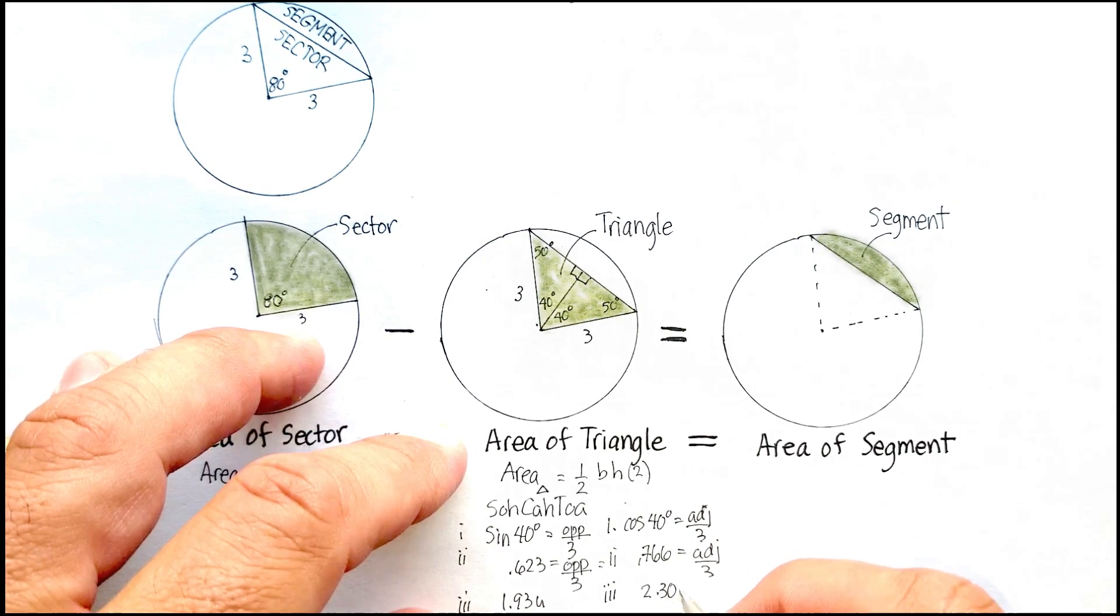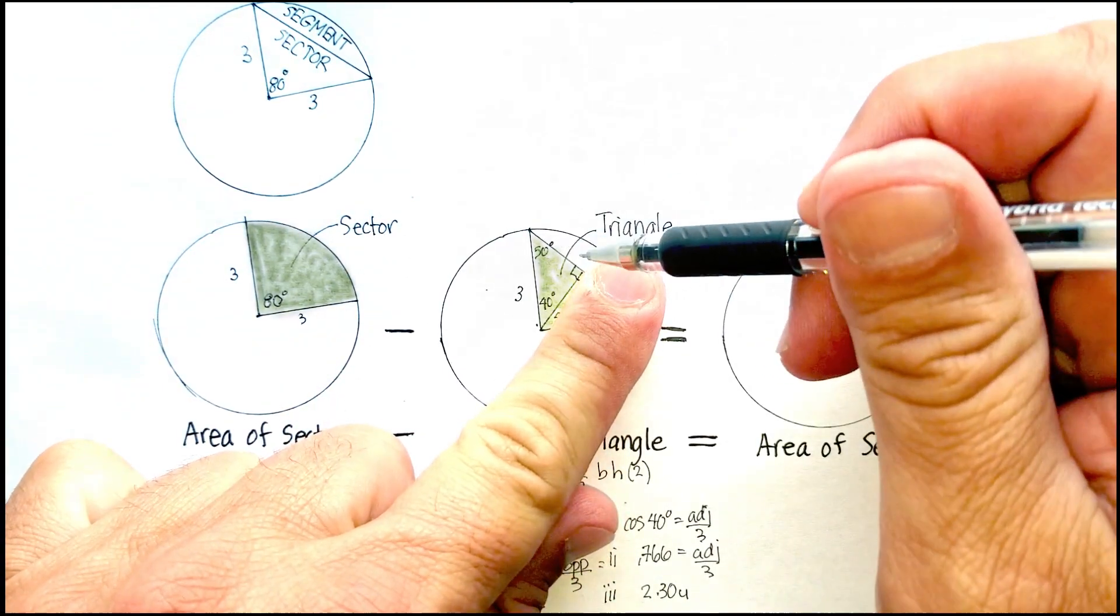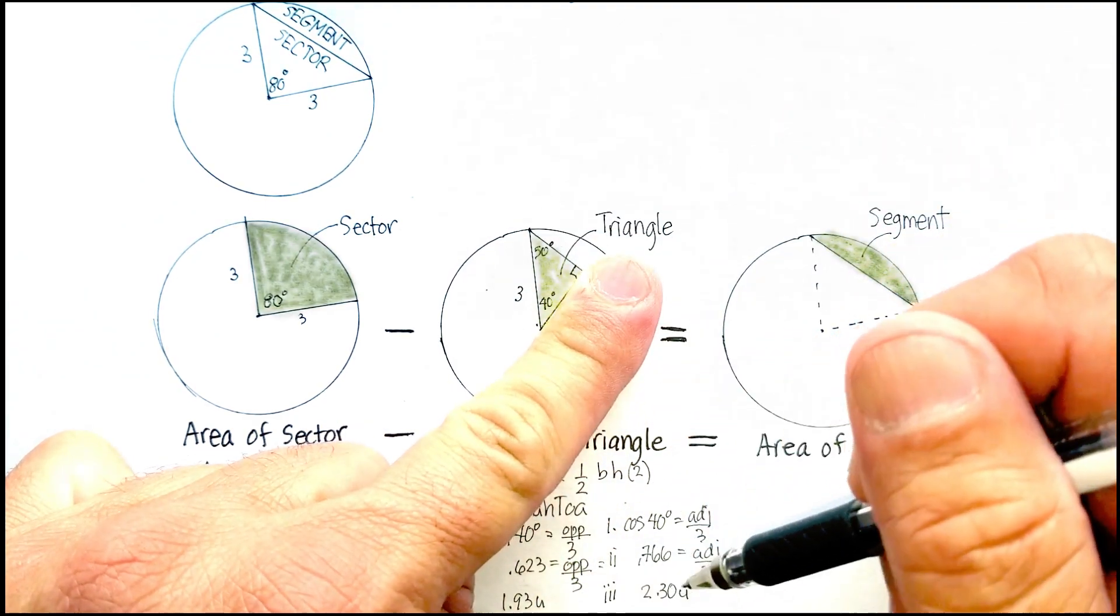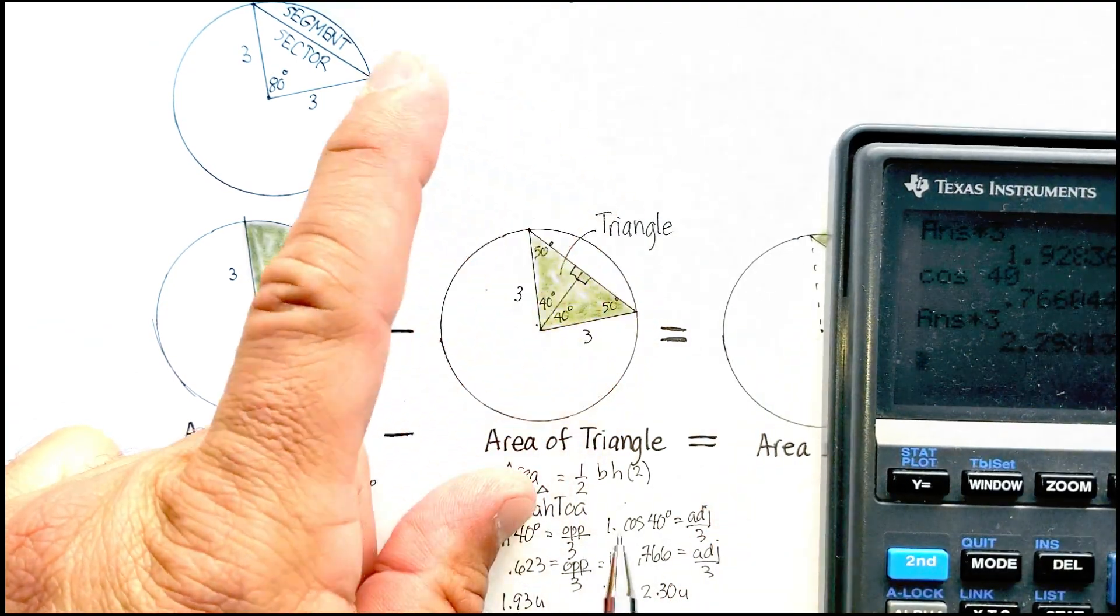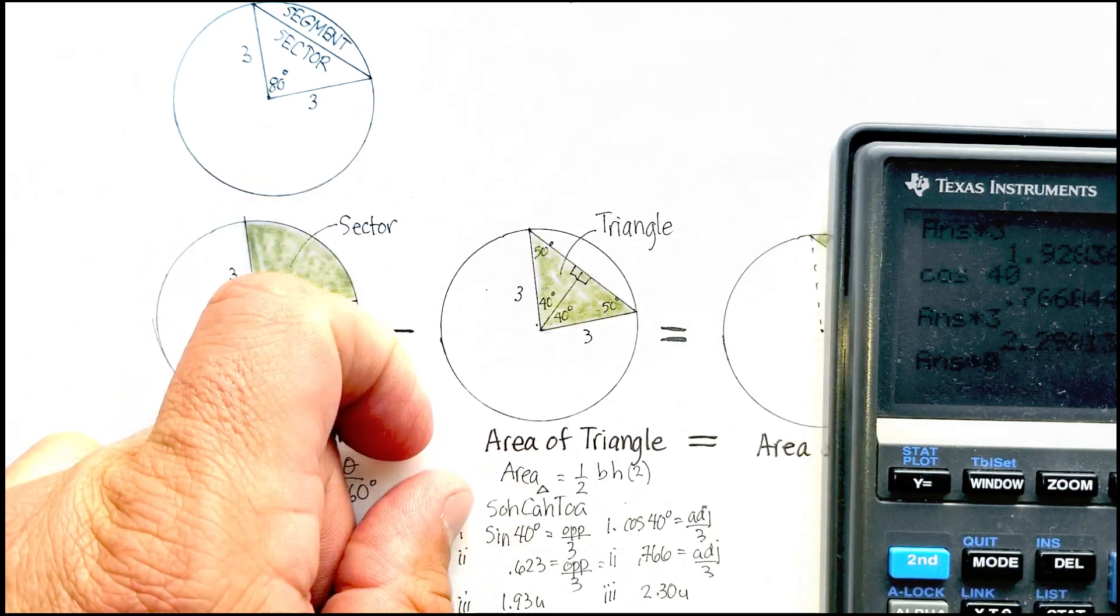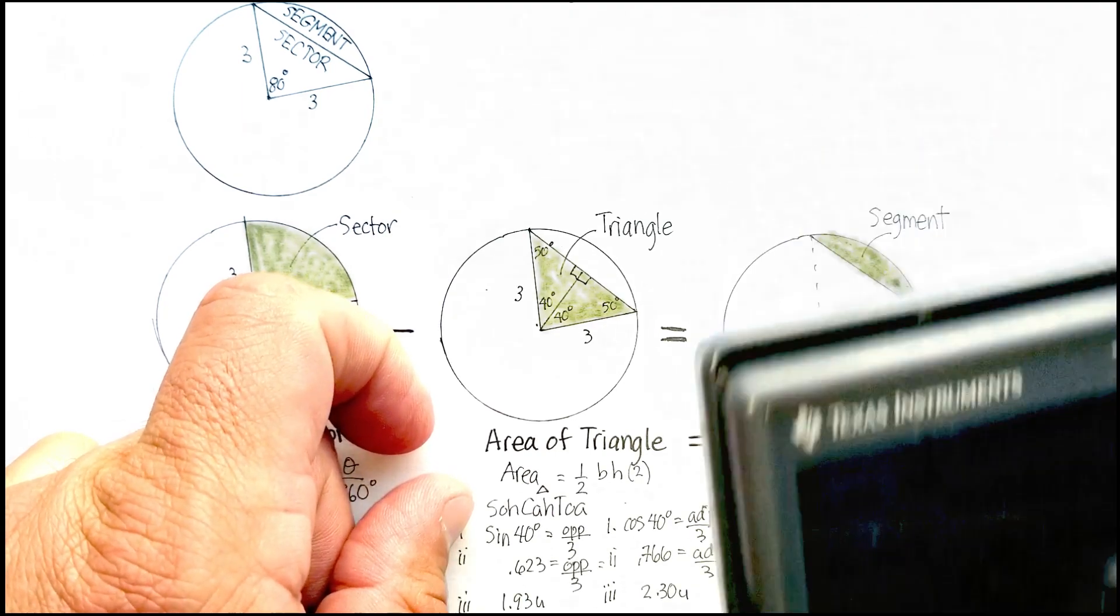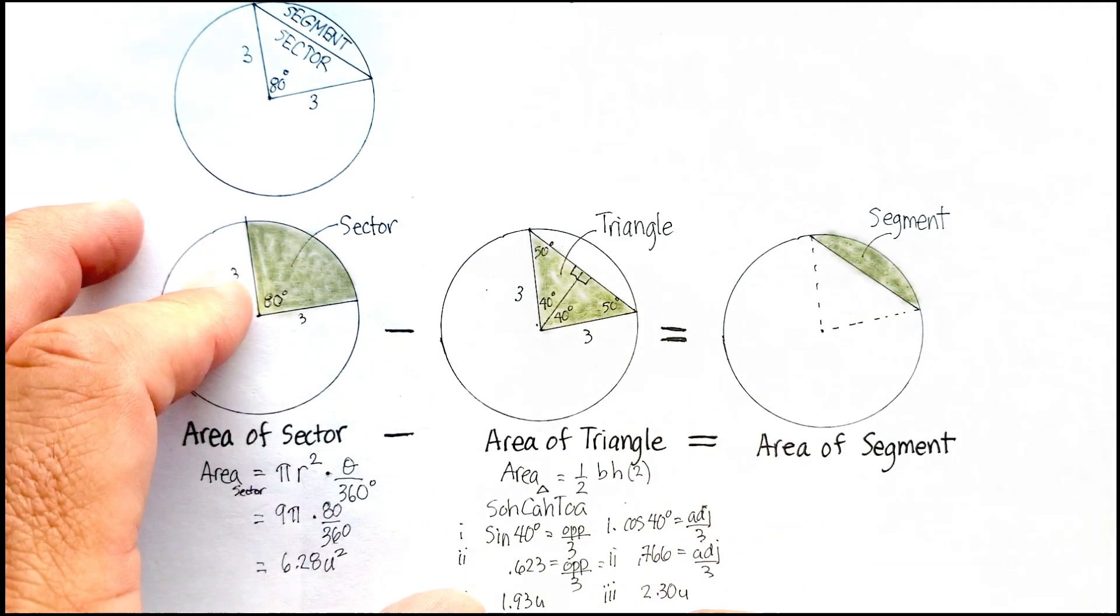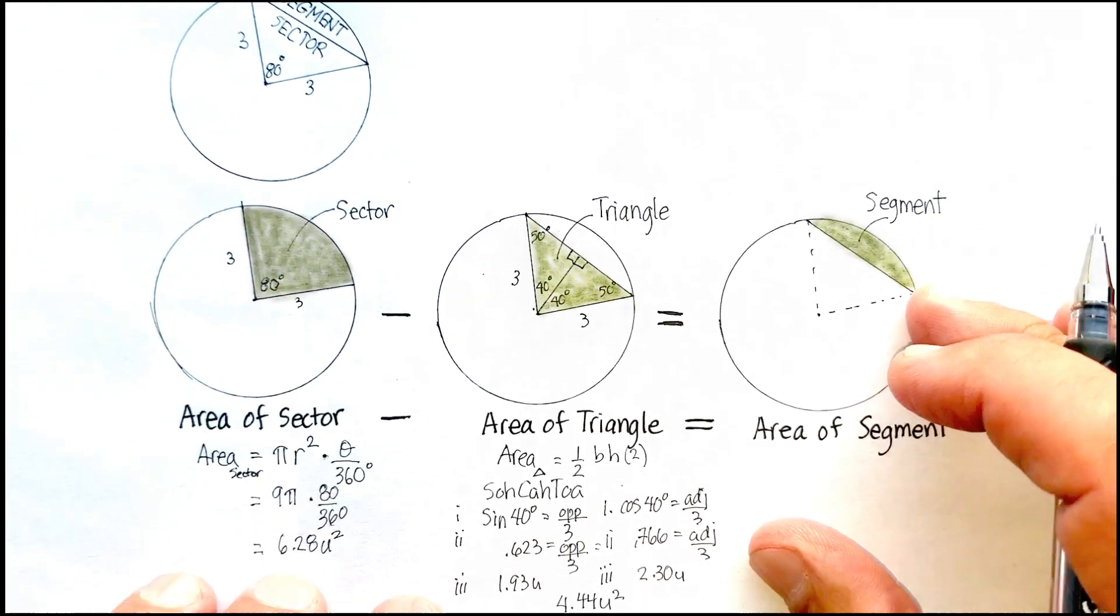Now, remember what I said, I can just pretend this is just like my little square or like a little rectangle. So, I'm going to multiply 1.93 times 2.30, or just put it into this formula. Either one will work. 4.44 will be the area of my triangle, 4.44 units squared.